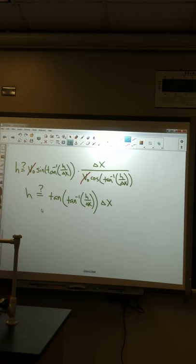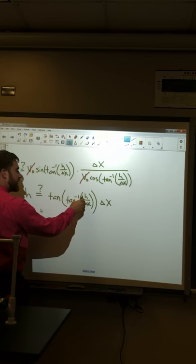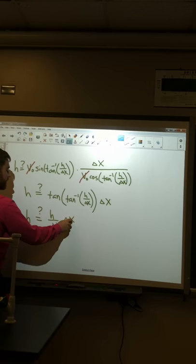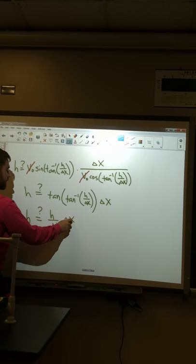Tangent of inverse tangent. If you don't remember this from your pre-calc class, go back and review a little bit. Tangent of inverse tangent, that just leaves you with what's inside the operator here. That just leaves you with h over delta x. And of course, we still have our delta x right here. h is equal to h. The monkey will always get hit.